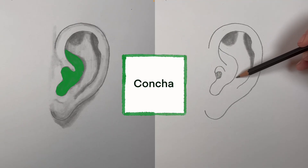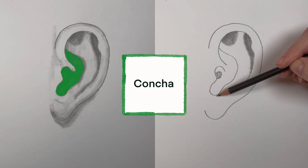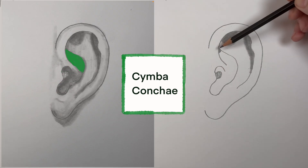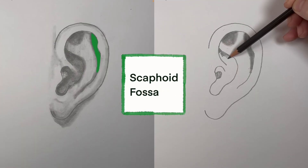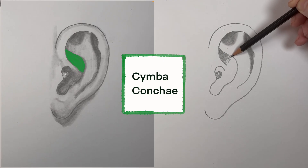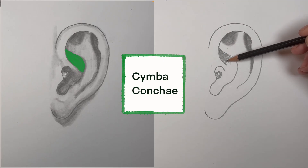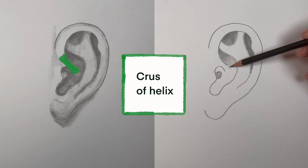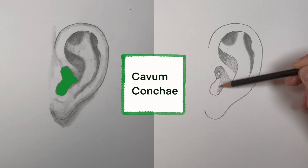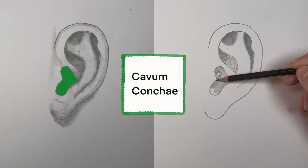Let's look at the concha again, that deepest part. This is that shell shape. We can divide that up into a few different areas too. You have the cymba. Cymba is Latin for boat — remember earlier we had the scapha, which was Greek for boat, so you have a Greek and a Latin boat here. The cymba is the part of the concha that is above the crus of the helix. And below the crus of the helix, we have the cavum. Cavum is Latin and it means a hollow — think about a cave.